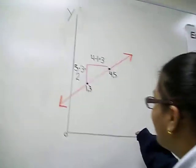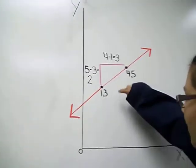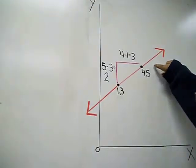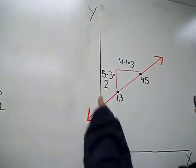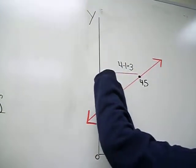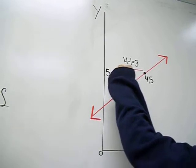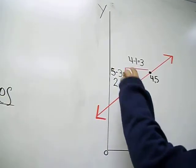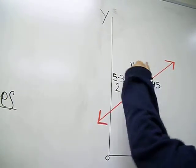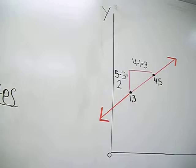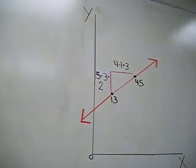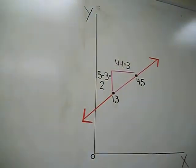So it's two-thirds. And then onto the graph, you have your one point, which is (1, 3), and your other, which is (4, 5). So since we subtracted 5 minus 3, which is 2, which is your rise, and 4 minus 1, which is 3, which is your run. So there you go, there's your rise over run, which is your slope.